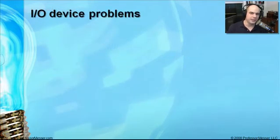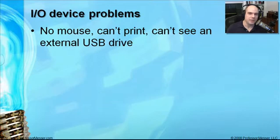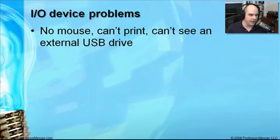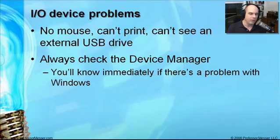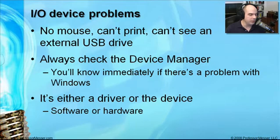If you're not getting a blue screen of death and your system isn't locking up, that doesn't mean you aren't having problems. You may find problems with single devices — maybe you've plugged in a USB drive and can't see it, maybe you tried to print and it says it can't print from that port, or maybe your mouse isn't working. One great place to go whenever these start happening is the Device Manager. You'll know immediately if there's a hardware problem or driver problem where the hardware is not communicating with the Windows operating system.